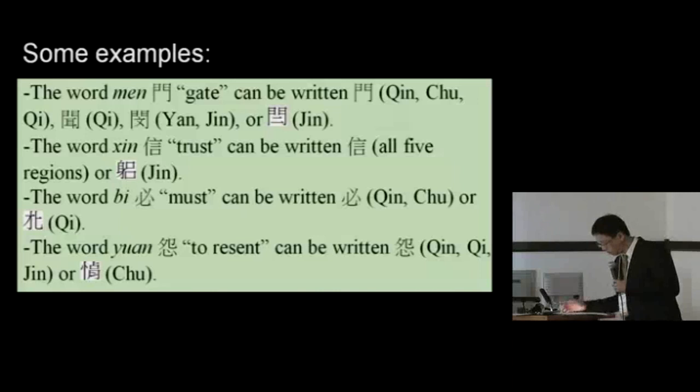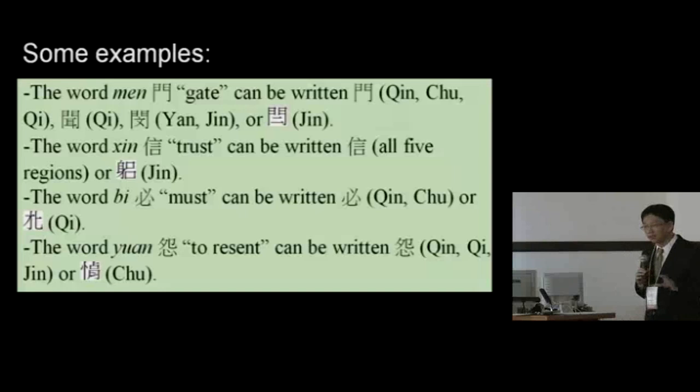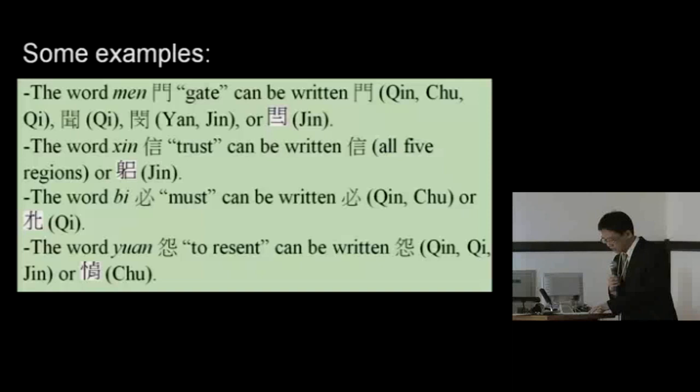To illustrate, the character Men is a semantograph that depicts a gate, but among the different regions it can be written a number of ways, as you can see on the screen.